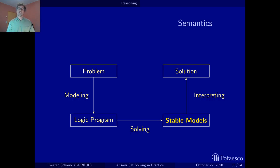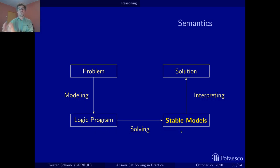The example I was giving a couple of times was timetabling. So you have a timetabling problem, you specify it, and then every stable model corresponds to an alternative timetable. This is one thing that you can do, but there's much more in ASP.